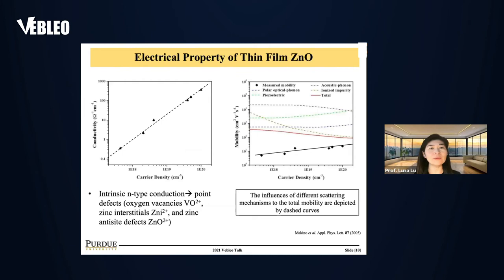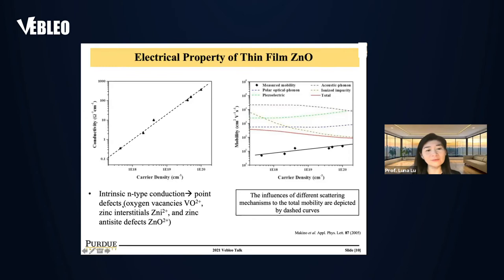Here I want to show some experimental results on film quality. Looking at carrier density versus electrical conductivity, conductivity drastically increases after carrier concentrations of 10^19. This is primarily attributed to intrinsic N-type doping by point defects such as oxygen vacancies, zinc interstitials, and zinc anti-site defects, which drastically increase the unintentional doping carrier concentration and thus increase conductivity.